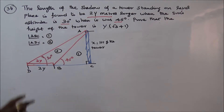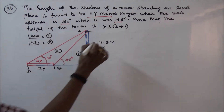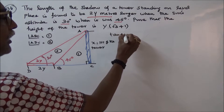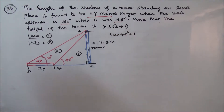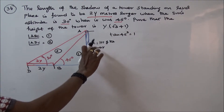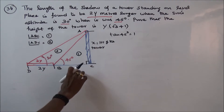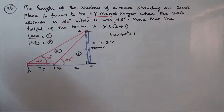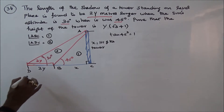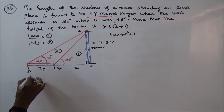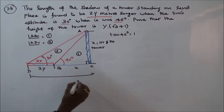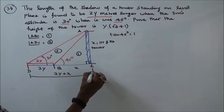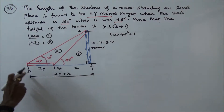Taking the first triangle: tan 45 is equal to 1. We know tan 45 equals perpendicular by base. Here the perpendicular is x, so the base BC equals x. Therefore the length DC is 2y plus x.